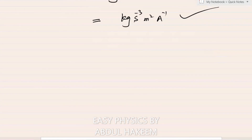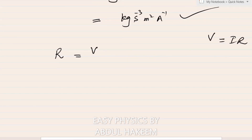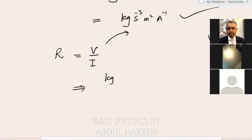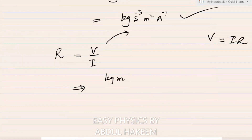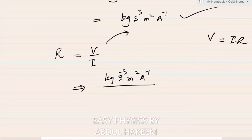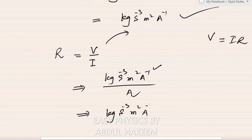Resistance is measured in Ohm (SI unit). Using Ohm's law V = IR, so R = V/I. Voltage base unit already derived is kg·m²·s⁻³·A⁻¹, divided by current (ampere). The ampere power goes from minus one to minus two, giving the base unit of resistance as kg·m²·s⁻³·A⁻².